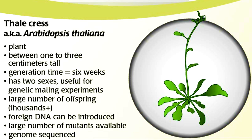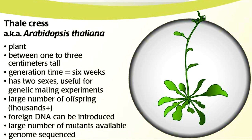Arabidopsis thaliana, or thale cress. Plant. Between 1 to 3 centimeters tall. Generation time is 6 weeks. Has 2 sexes, useful for genetic mating experiments. Large number of offspring, 1000 plus. Foreign DNA can be introduced. Large number of mutants available. Genome is sequenced.